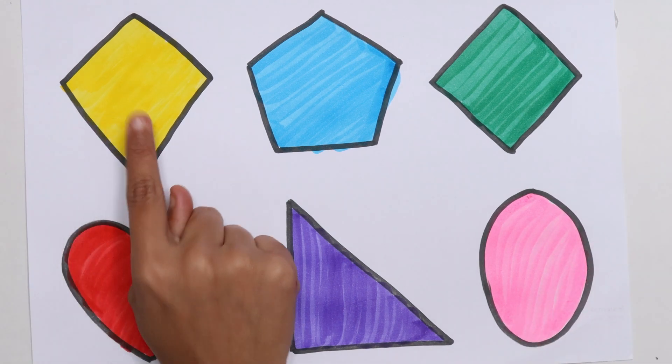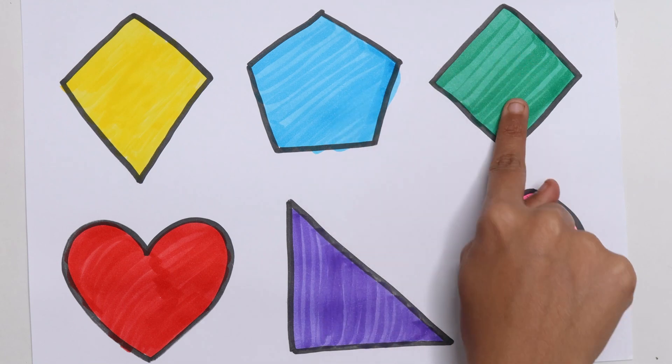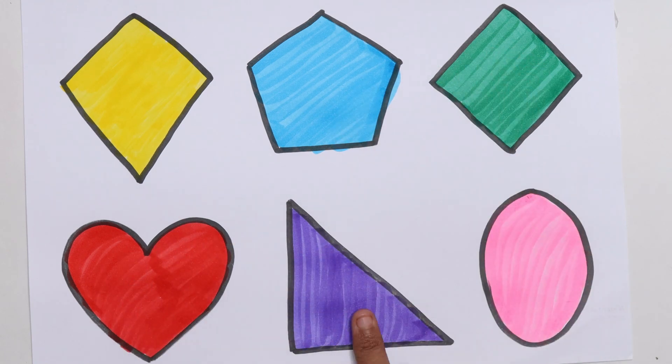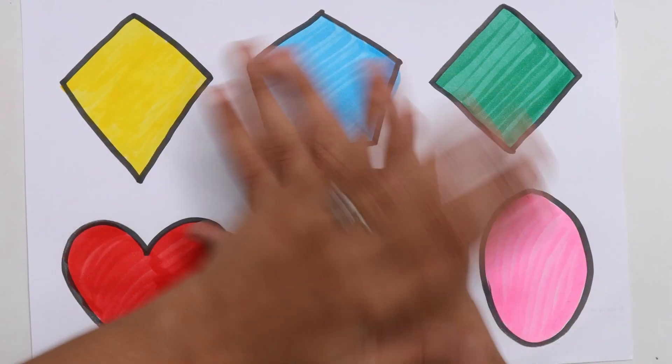Ellipse, kite, pentagon, rhombus, heart, right triangle, ellipse. Thank you for watching my video. Don't forget to like and subscribe. Bye-bye.